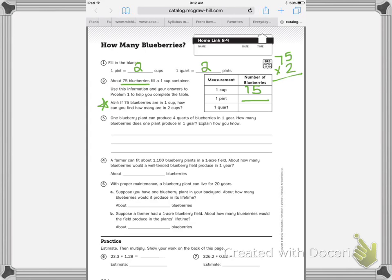Then it says one quart. So I'm going to take my answer and make it a blue answer. And you're going to multiply it by two, because there are two pints in a quart. And your blue answer is how many blueberries fit into a pint.